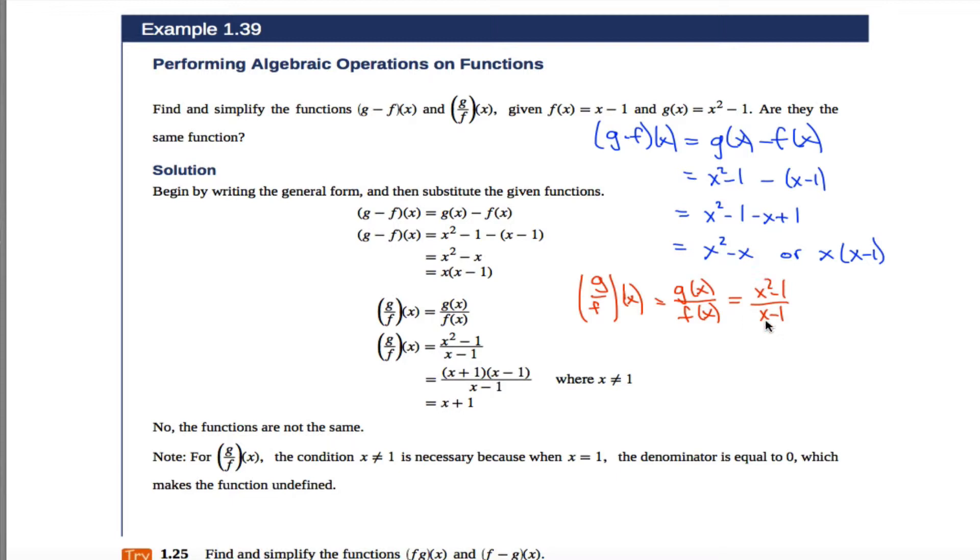And you might be like, yeah, and cancel out these x's. No, don't do that. You can't do that. You can't cancel over addition and subtraction. You can only cancel over multiplication. If you could rewrite the numerator so it was something times something, then maybe you could do some canceling.